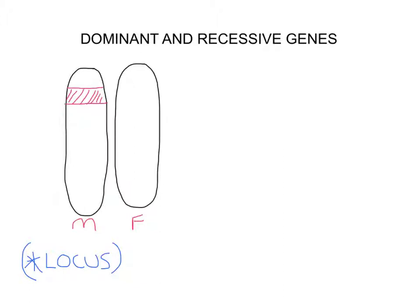So if the tongue rolling gene is at that position on the mother's chromosome, at exactly the same point on the father's chromosome we would find a gene for the ability to tongue roll. We use the word gene to describe a small section of DNA, but an alternate version of the same gene we call an allele. In textbooks and on the internet you often see these referred to as alleles. Technically, each is an alternate version of the other, so they're both alleles of each other.